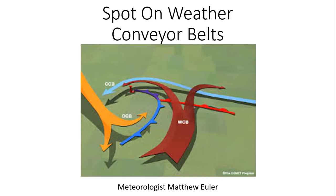We have to also look at the three-dimensional aspect of the atmosphere, and we have to look at something known as conveyor belts. I'm going to do a brief coverage of these atmospheric conveyor belts. We generally have three conveyor belts when we talk about transportation. These conveyor belts transport changes in temperatures, whether it's warmer air or colder air. They also transport moisture, and they play a large role in the development of a mid-latitude cyclone, especially these more intense extratropical lows.